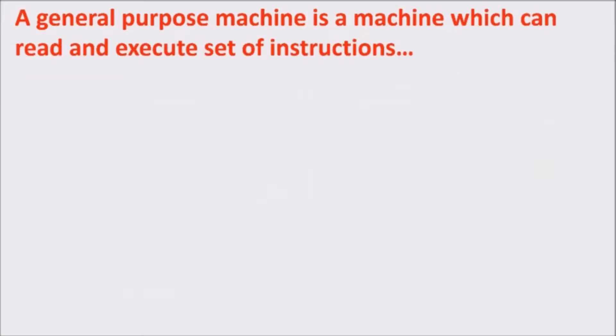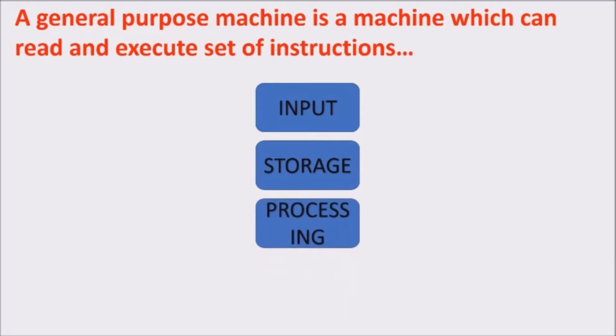Let's forget bits for a while. Let's focus on the general purpose machine, which can read and execute set of instructions. We can divide this process in four steps. An input phase in which computer acquires data. Later, it stores the data and processes them, providing an output.